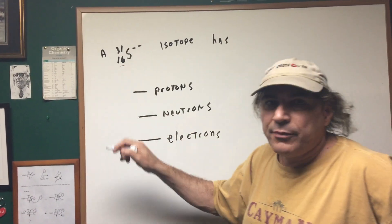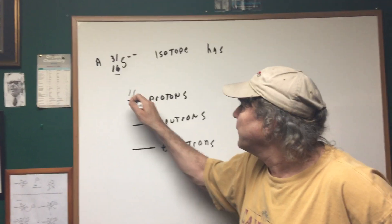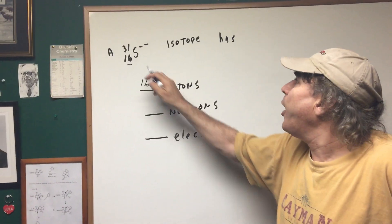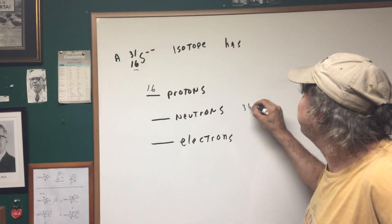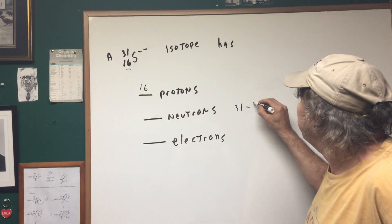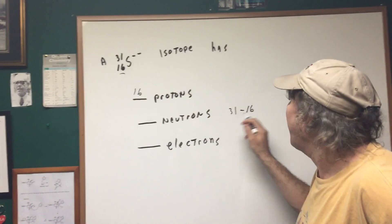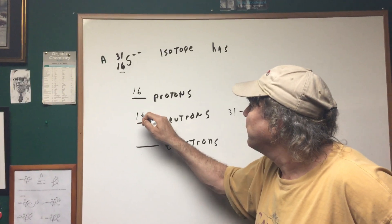Well, the protons are easy. That's the 16. The neutrons you simply take the mass minus the atomic number, and that would give me 15.